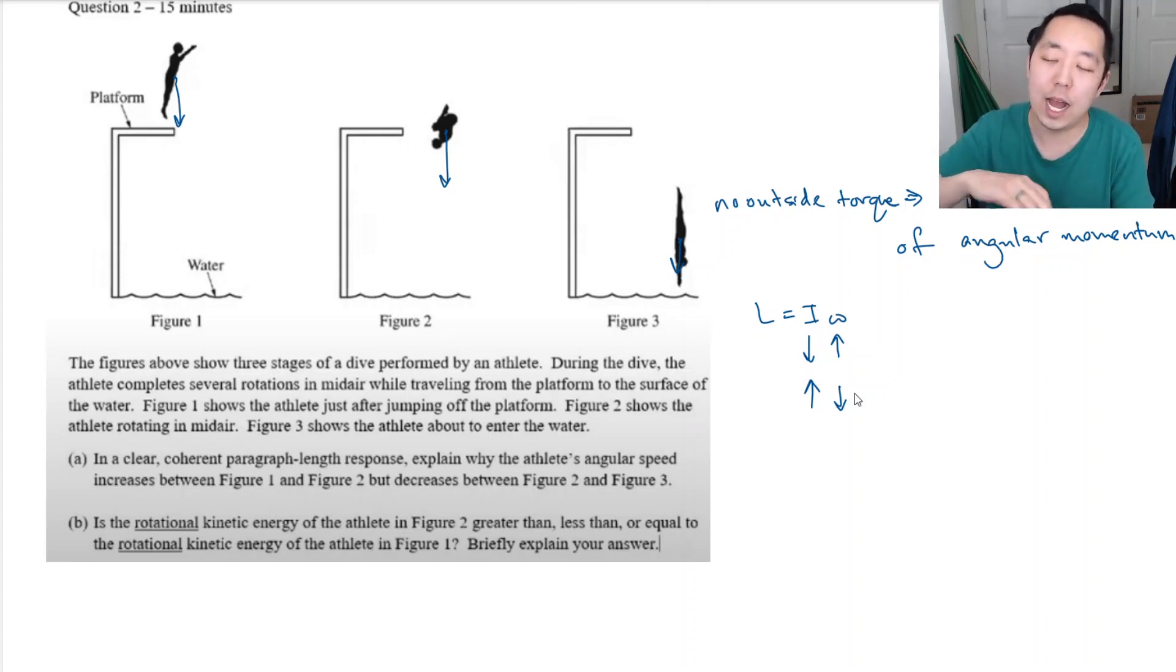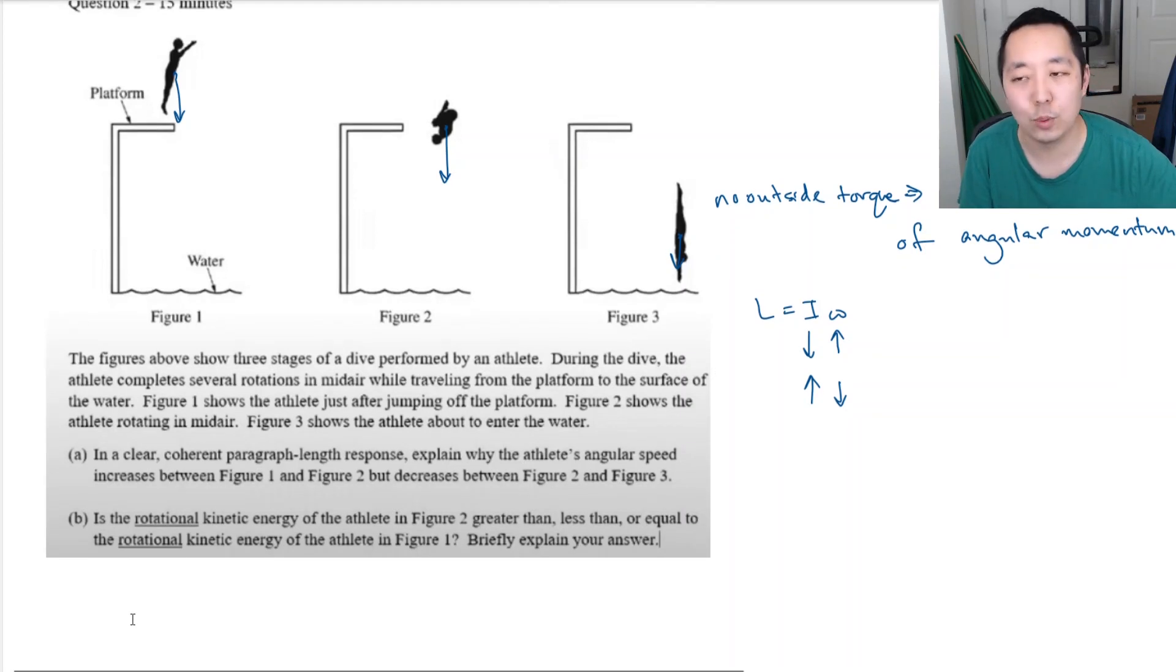Now, what's happening to I? I is rotational inertia. And in general, in physics 1, it's kind of weird. In physics 1, you don't analytically solve for rotational inertia in a lot of cases. But in general, it's about the distribution of mass. That's what rotational inertia is about. And the further mass is distributed from the center, the higher the rotational inertia.